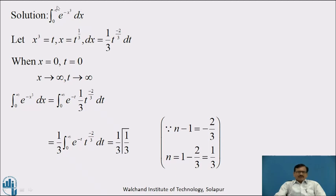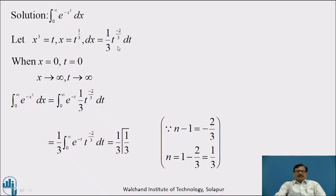To express this in terms of the Gamma Function — that is, integration from 0 to infinity of e raised to minus x into x raised to n minus 1 dx — the proper substitution is x cube equal to t. Taking cube root on both sides, we get x equal to t raised to 1 by 3. That is, dx equal to 1 by 3 t raised to minus 2 by 3 dt.